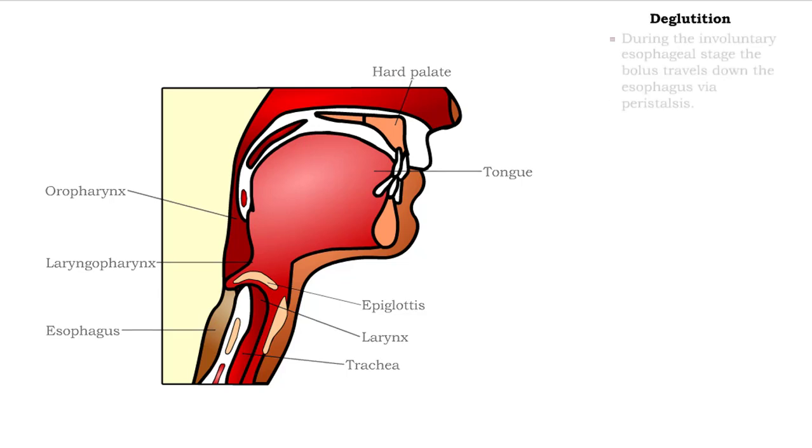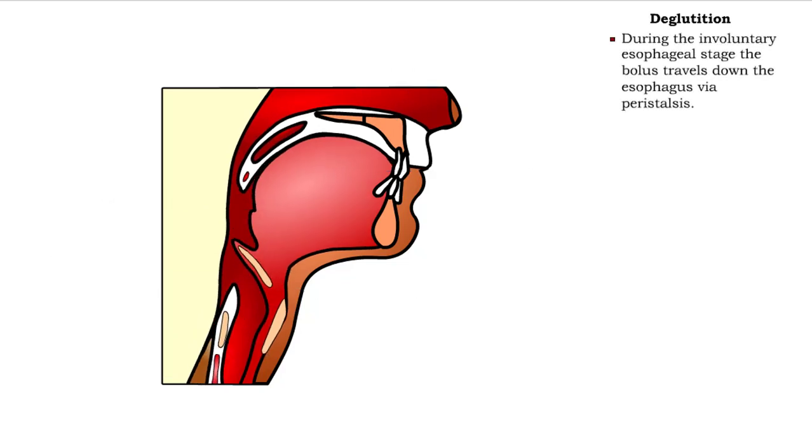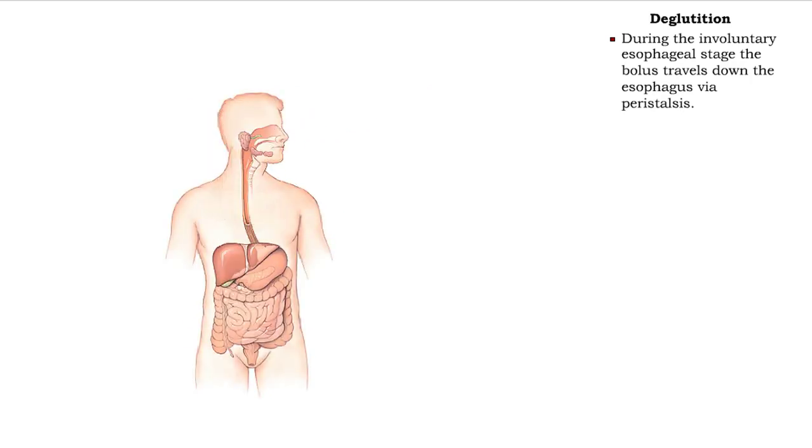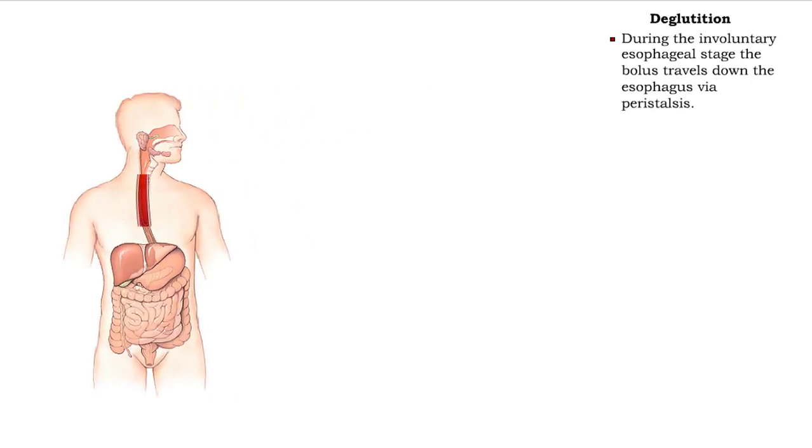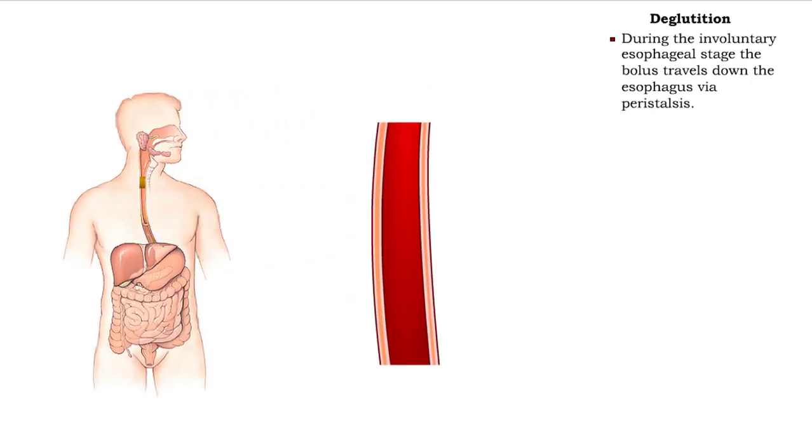During the involuntary esophageal stage, the bolus travels down the esophagus via peristalsis.